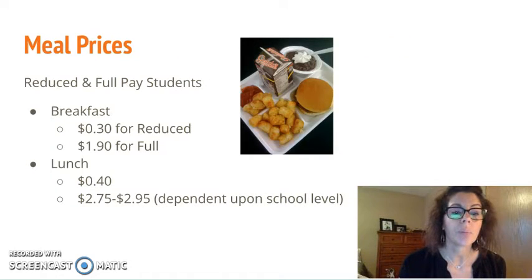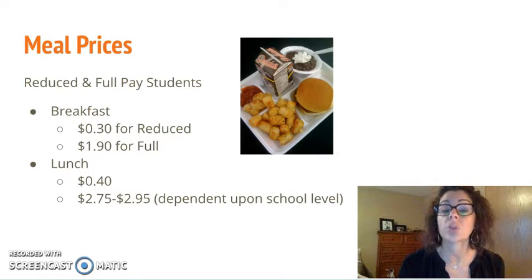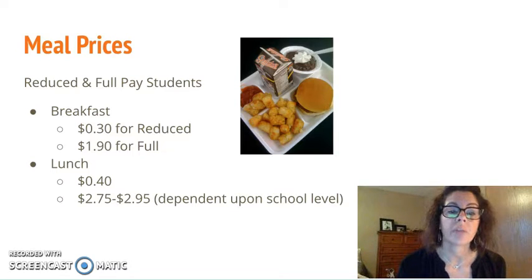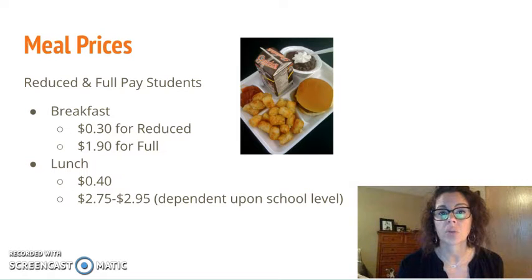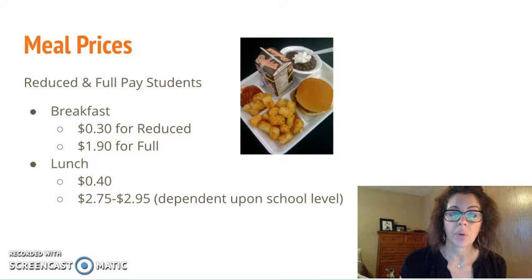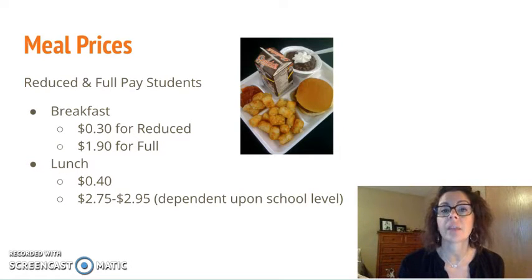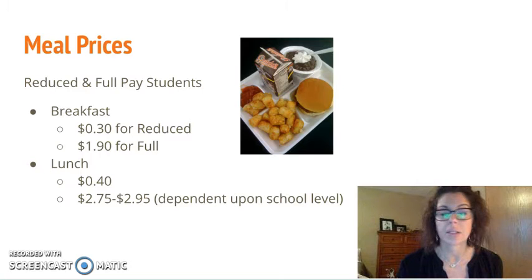Our meal prices in USD 418 are shown here. I went ahead and included the reduced price as well as full-paying students for breakfast and lunch. The menu prices vary a little bit by building level — elementary is $2.75 and high school is $2.95 — and I think that difference accounts for the number of meal options available for older students compared to elementary.